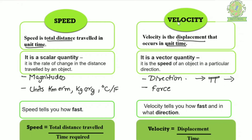Speed is the rate of change in distance traveled by an object, while velocity is the speed of an object in a particular direction. Simply put: speed tells you how fast you are going, and velocity tells you how fast and in what direction you are going. The formula for speed is total distance divided by time, and for velocity it is displacement divided by time.